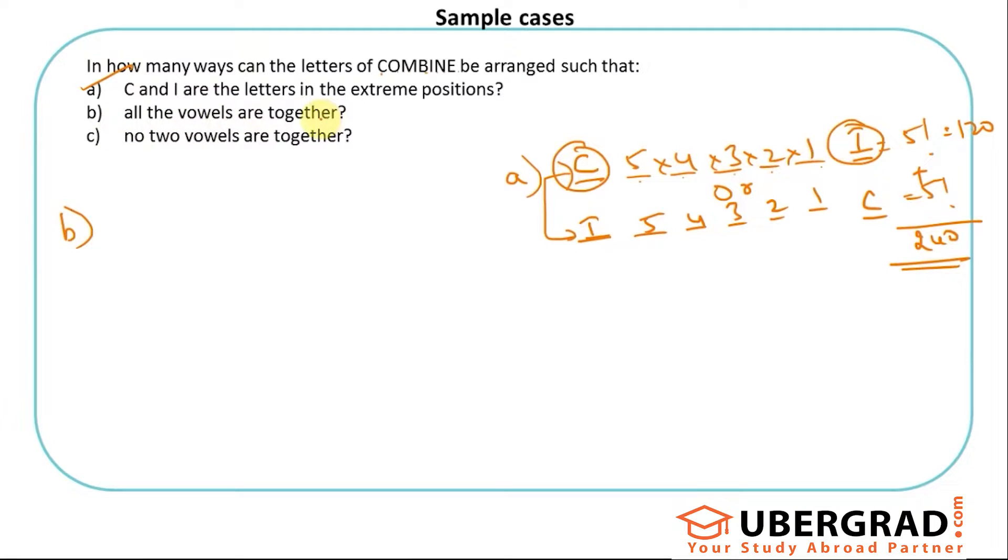It says all the vowels are together. When some letters have to be together, some letters would not be together, like that's the third question. We will first solve the together part. So what are the vowels in this? O, I, and E. So whatever the letters that I want to be together I assume them to be one new letter, let's say called alpha. So what are the letters I have? C, alpha, M, B, and N. So we had seven letters because these three have pulled into one, I should be having five letters: 1, 2, 3, 4, 5.